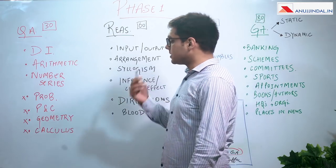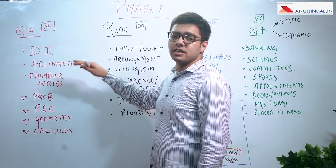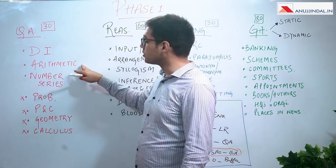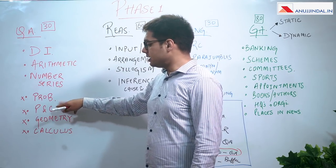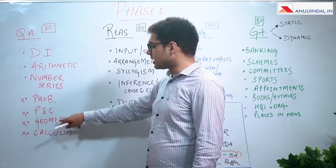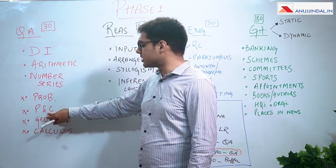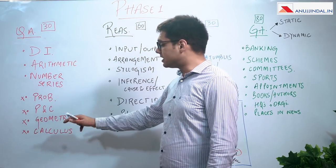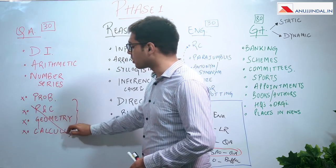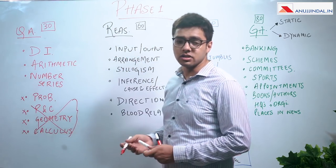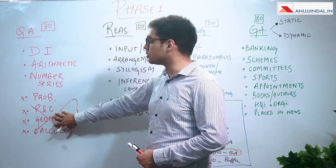Quantitative aptitude generally has questions on data interpretation, arithmetic — which is time and speed, time and distance, ratio and proportion, compound interest, simple interest — number series, and maybe one question on probability. Many people end up preparing permutation and combination, geometry, and calculus, but these are sections not asked or not asked in any significant fashion. You can conveniently ignore these sections unless you really want to go into the next level of detail.